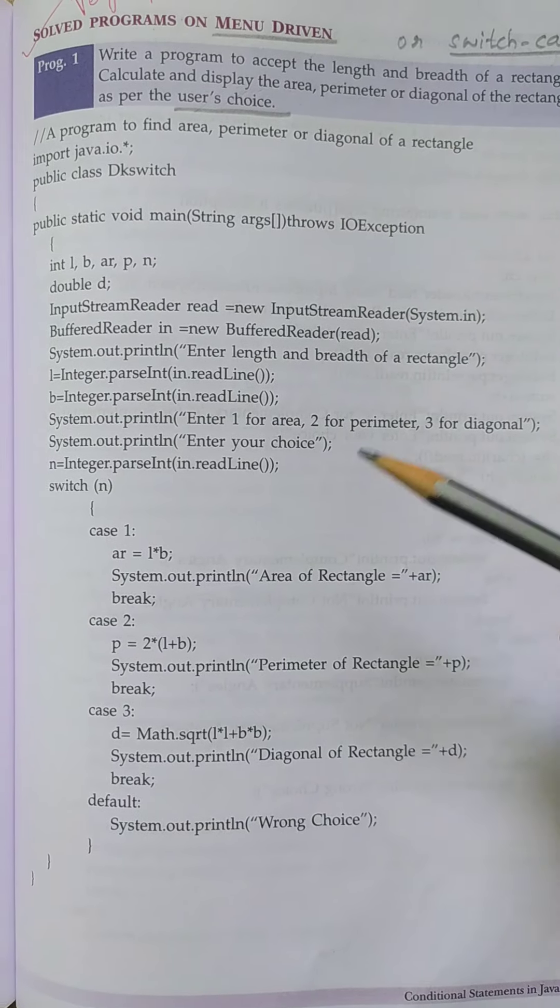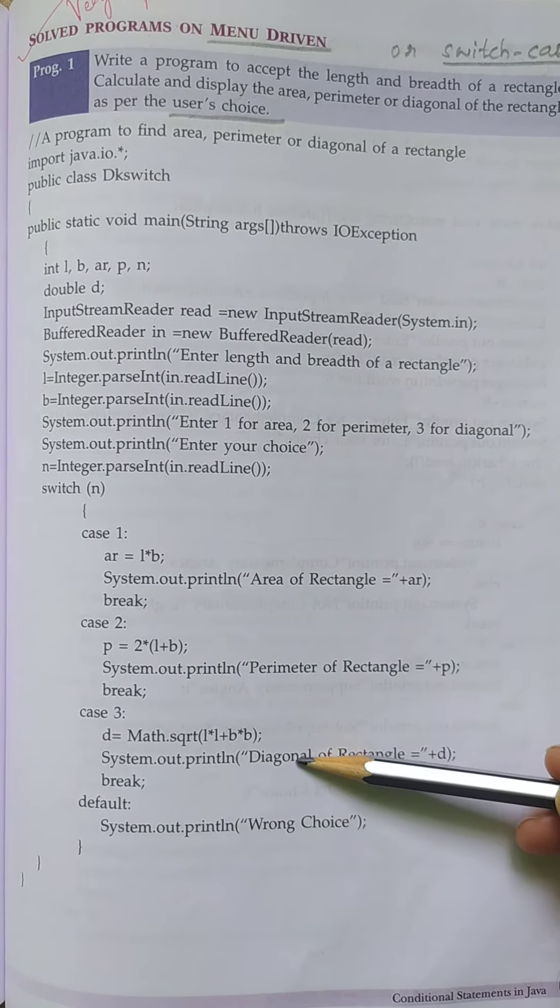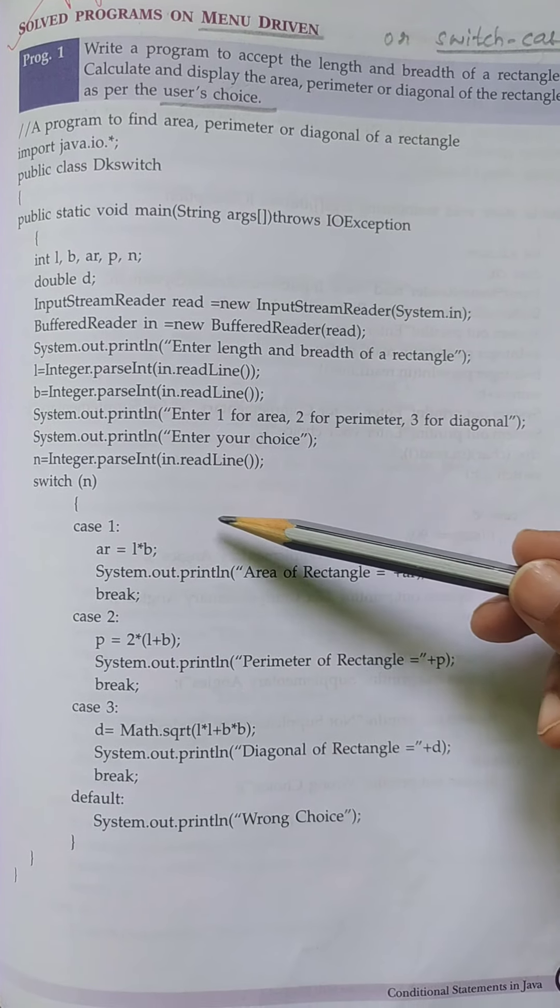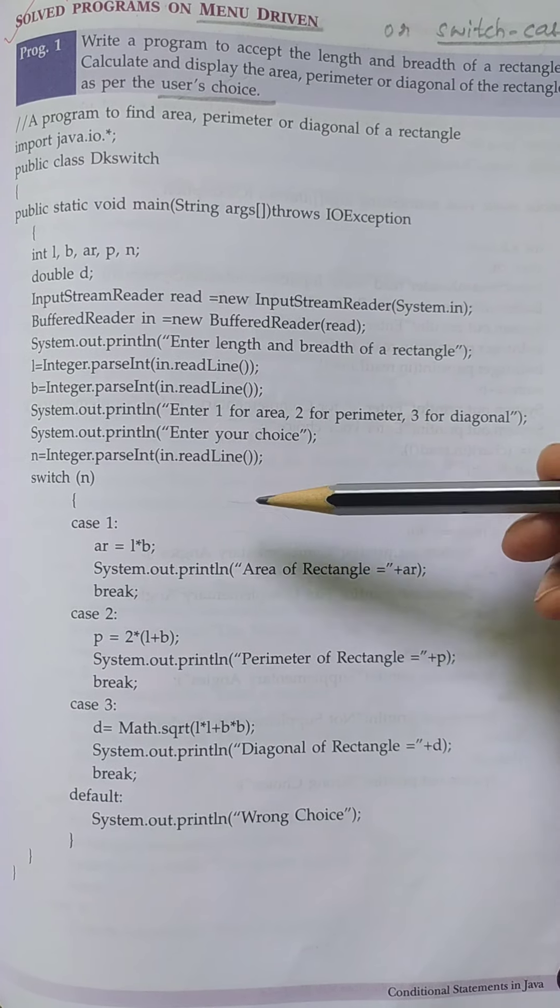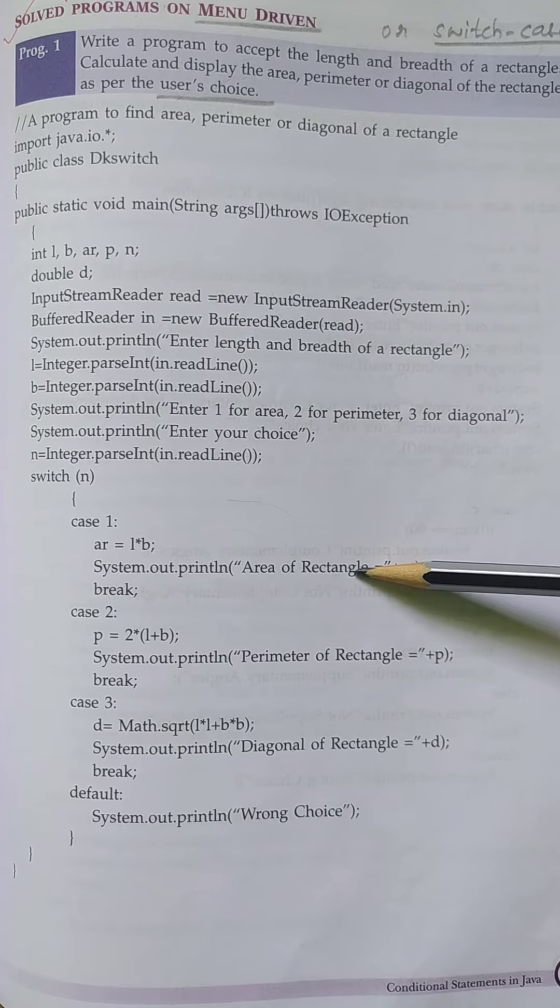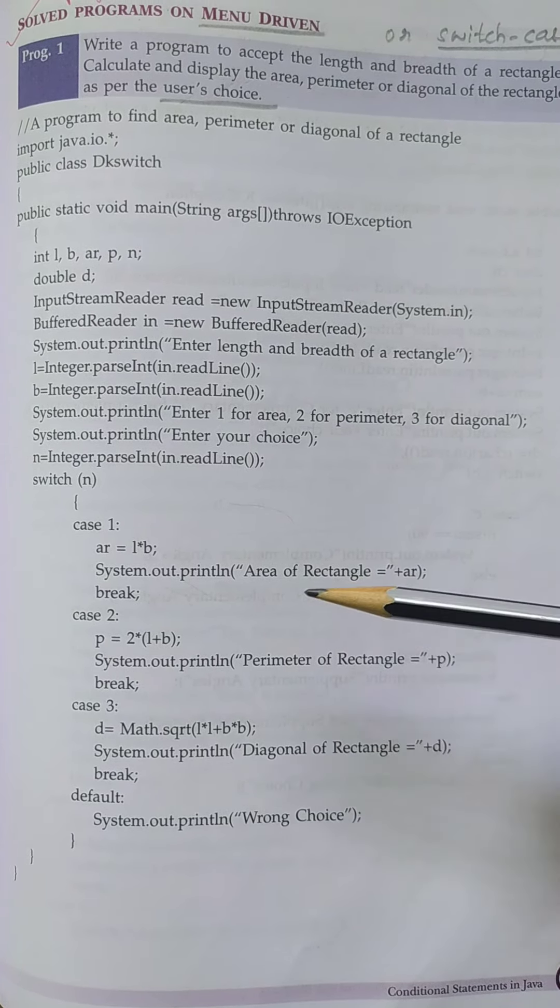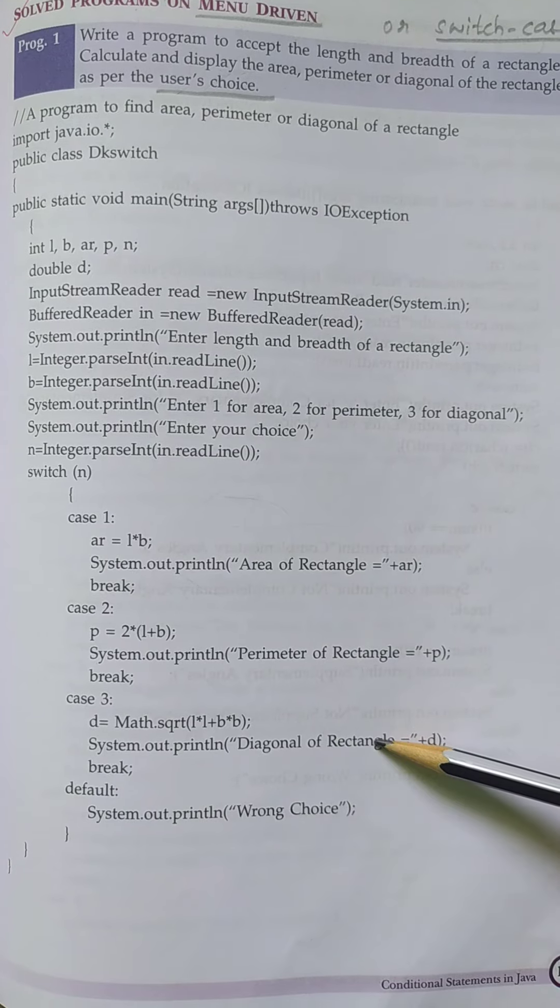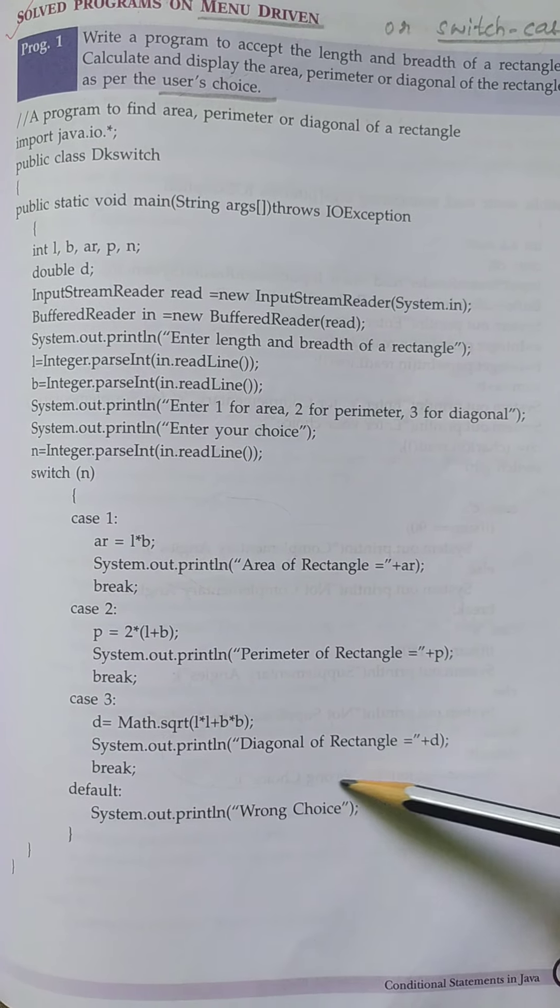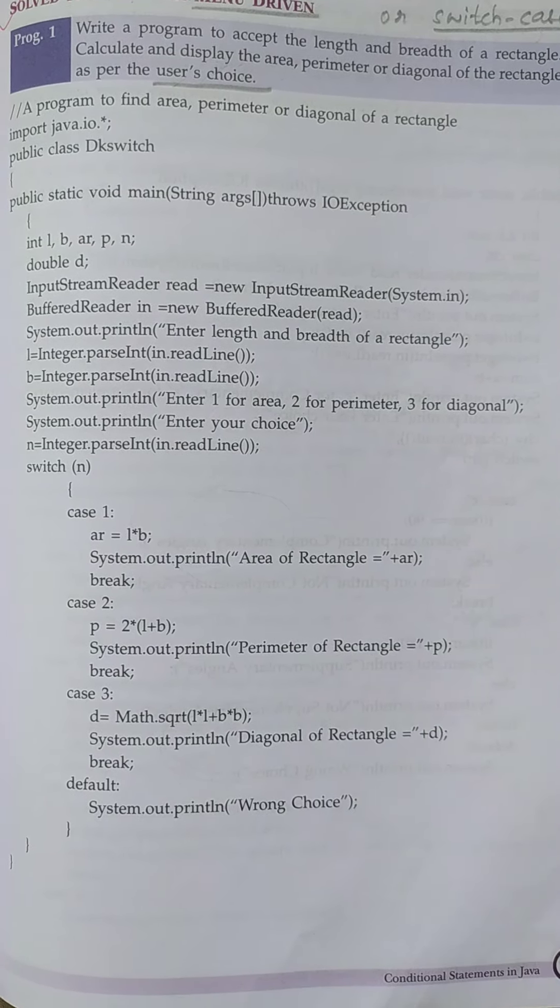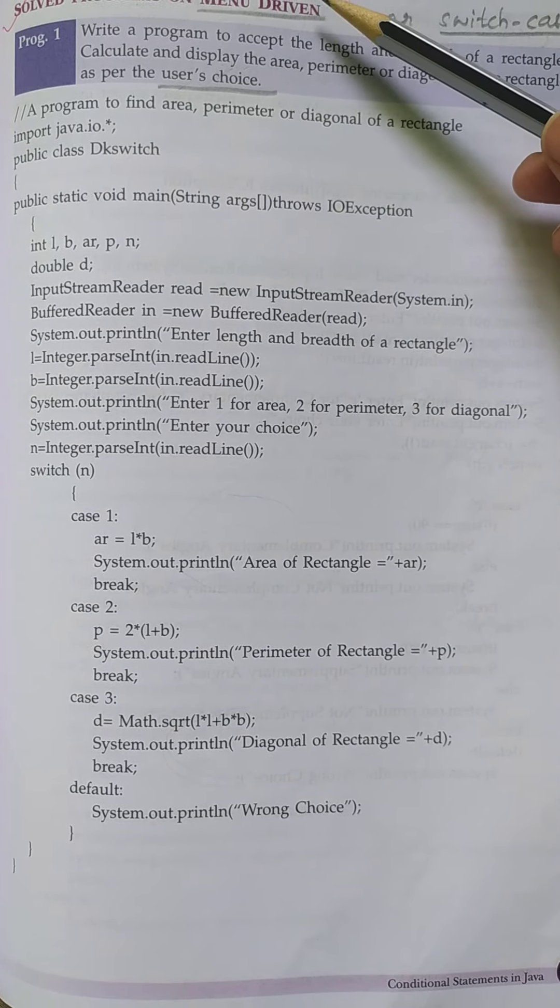User's choice means if there are more than one cases, he can execute only one case. If he wants to find the area of a rectangle, he can execute only this case at a time. If he wants to find the diagonal of a rectangle, he can execute only this case at a time.